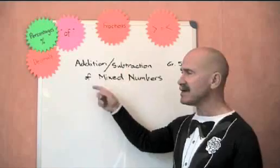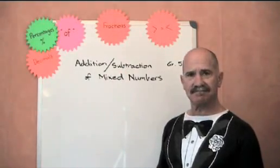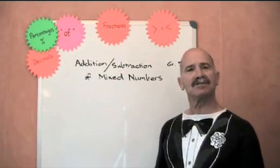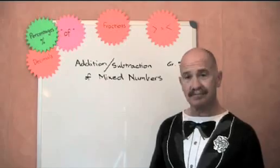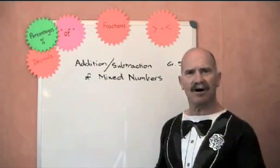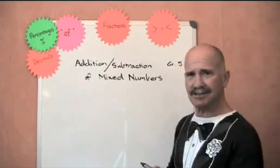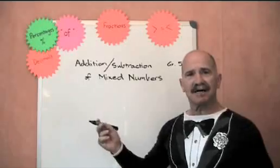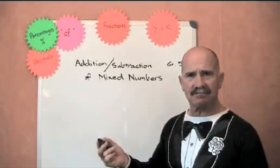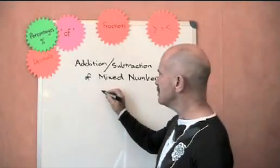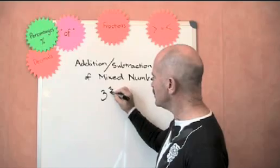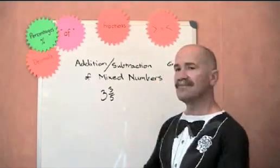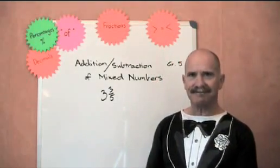And we're doing addition and subtraction of mixed numbers. Hand up those who know what a mixed number is. Oh wow, I don't have to shout it out, but that's good. Because a mixed number is a whole number and a fraction together, like 3 and 3 fifths. That's a mixed number. Are you with me?